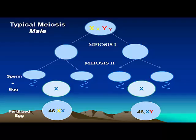Typical meiosis in a male. We start with an X chromosome and a Y chromosome. The DNA replicates. The chromosomes then divide through meiosis I, and then they divide again, creating sperm that contain either an X chromosome or a Y chromosome through meiosis II. The sperm then fertilize an egg which contains an X chromosome, and the fertilized egg therefore has 46 XX female or 46 XY male.